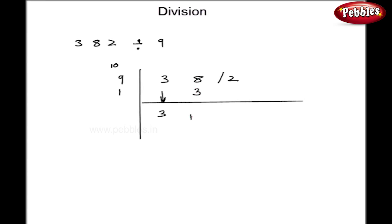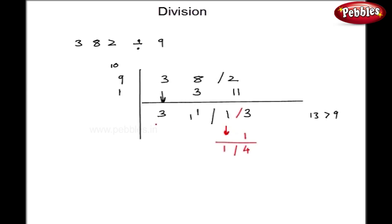3 into 1 is 3. Let us add, so I get 11 here. 11 into 1 is 11, so here I get 13. Now, mind well — this 13 is more than 9, so I have to further calculate it. I'll give a stroke here and take this 1. 1 into 1 is 1, so I get 4. Since 4 is less than 9, my calculation is over. This figure becomes 41, and adding this 1, my quotient is 42 and remainder is 4.